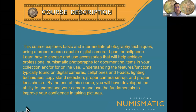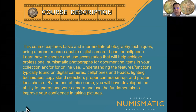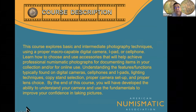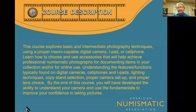This course explores the basic and intermediate photography techniques using a proper macro-capable camera, iPad, or cell phone. We teach you how to use those accessories to help you achieve really good numismatic photographs for documenting items in your collection. Understanding the features is a big part of it, along with camera setup and proper lens choice. Hopefully by the end of the course you'll have a better understanding of what your camera is all about and how to take numismatic photographs.